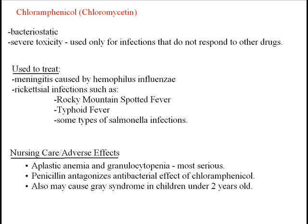Chloramphenicol is also known to cause gray syndrome in children under the age of two. Gray syndrome is a toxic reaction characterized by acute cardiovascular collapse secondary to a deficiency in the liver enzyme that changes bilirubin into a form that can be removed through the bile. This enzyme deficiency leads to altered drug metabolism. Gray syndrome usually occurs during the first 48 hours after birth.